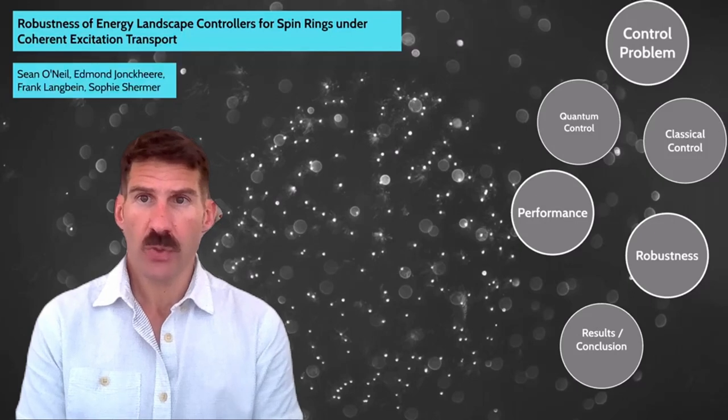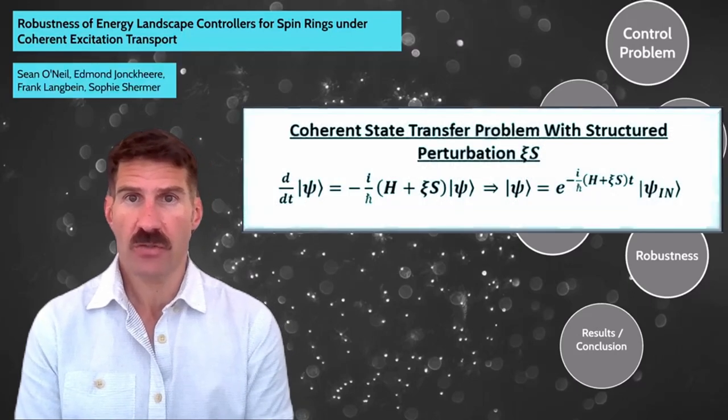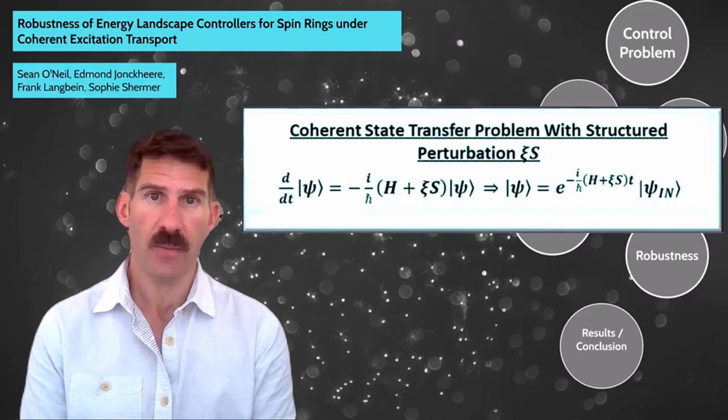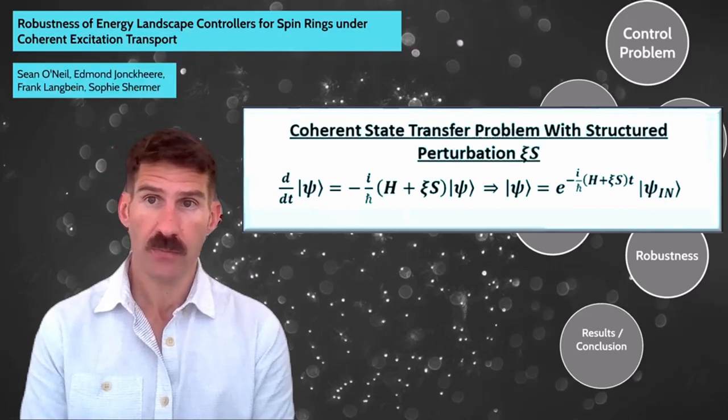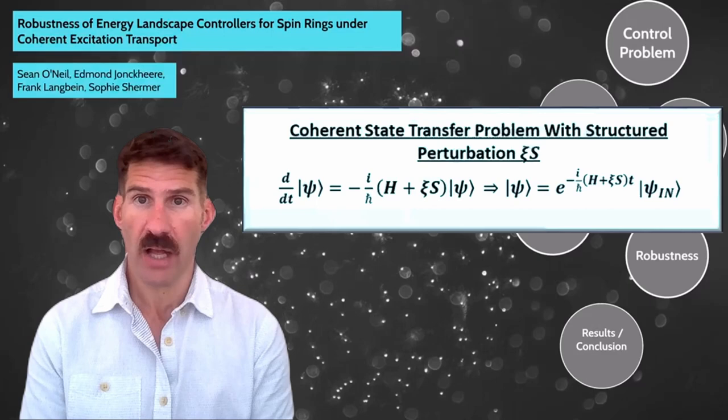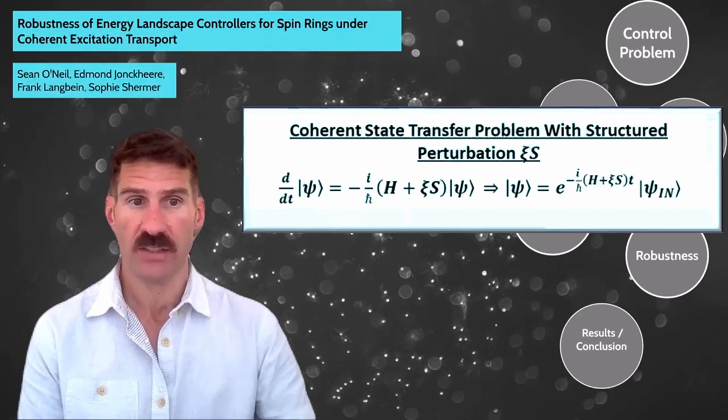In terms of the quantum dynamics, we consider the solution to the coherent state transfer problem generated by a nominal Hamiltonian with either coupling field or control errors. These uncertainties are encoded by the structure matrix S and modulated by scalar strength C.